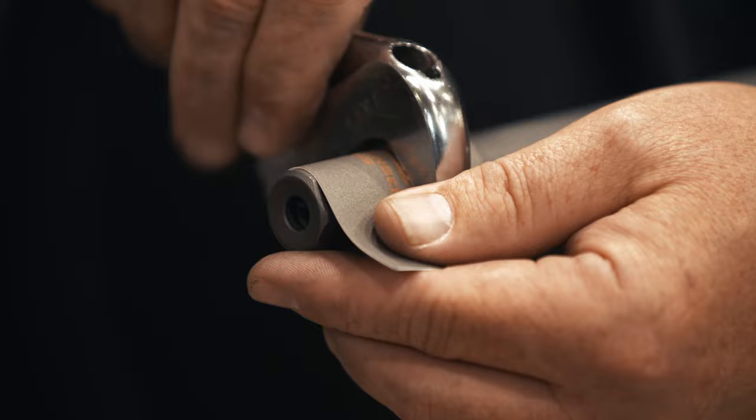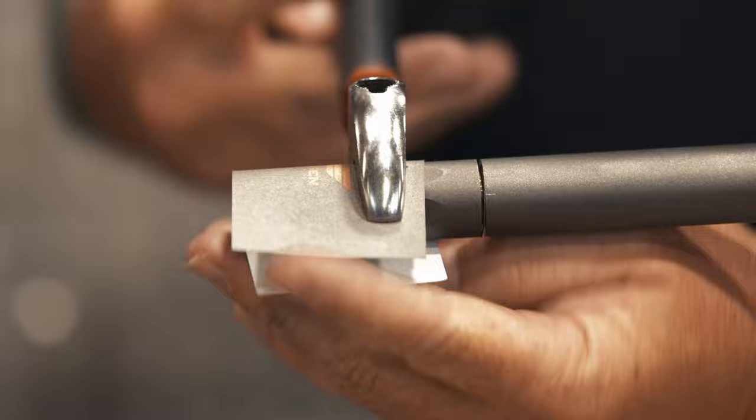Place a business card or cardstock around the brake to avoid damaging the finish and twist off muzzle brake using a crescent wrench.